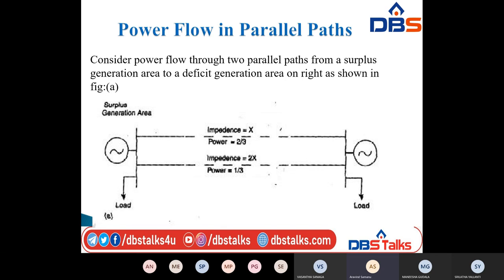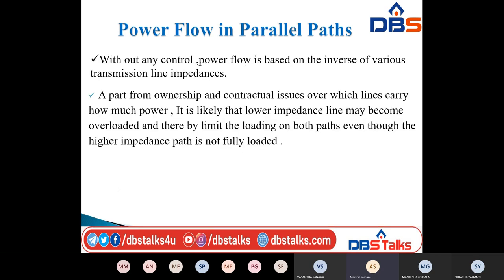Consider power flow through two parallel paths. One side is the surplus generation area and the other is the deficit area. Without any control, the power flow is based on the inverse of various transmission line impedances. Apart from ownership and contractual issues over which lines carry how much power, it is likely that the lower impedance line may become overloaded.